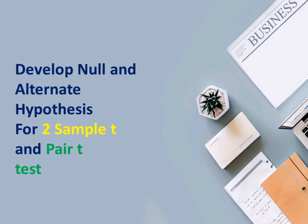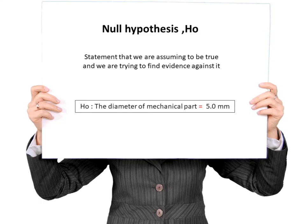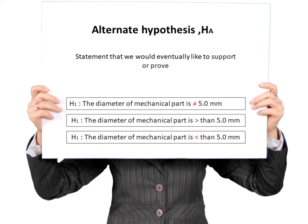Next, I will like to share with you how to develop null and alternate hypothesis for two sample T and pair T test. Before that, let's understand the definition of null and alternate hypothesis. Null hypothesis is the statement that we are assuming to be true and we are trying to find evidence against it. Alternate hypothesis is the statement that we would eventually like to support or prove.